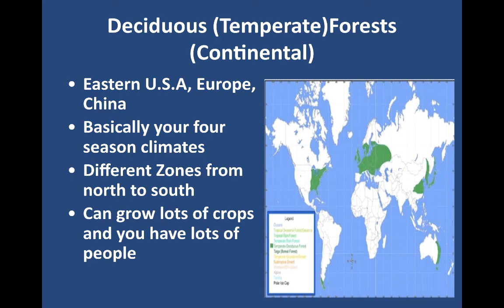Where does most of the world's population live? The deciduous or temperate forest, also called the continental weather zone — there are so many descriptions. The eastern United States, Europe, and China: these are your four-season climates with different zones from north to south. In the northern areas, winter lasts a little bit longer; in the southern areas, summer lasts a little bit longer. You can grow tons and tons of crops, so you have lots of people.